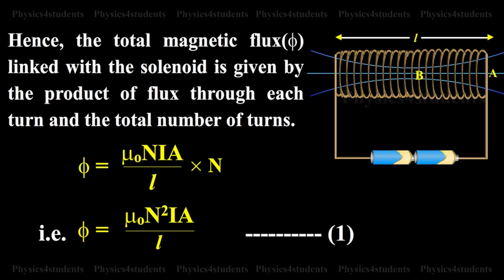Hence, the total magnetic flux phi linked with the solenoid is given by the product of flux through each turn and the total number of turns. Phi equals mu naught N I A by L into N. That is, phi equals mu naught N squared I A by L.